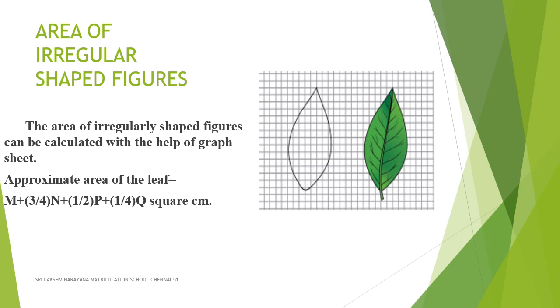Take a leaf from any one of the trees in your neighborhood. Place the leaf on a graph sheet and draw the outline of the leaf with a pencil. Remove the leaf. You can see the outline of a leaf on the graph sheet.